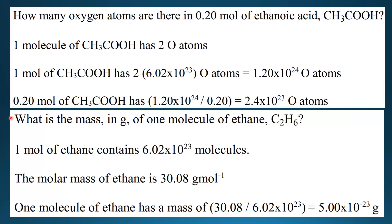The next question involves mass. What is the mass in grams of one molecule of ethane, which is C2H6? One mole of ethane contains 6.02 times 10 to the 23 molecules of ethane. The molar mass of ethane is 30.08 grams per mole. Therefore, one molecule of ethane has a mass of the molar mass divided by Avogadro's constant, which gives us 5.00 times 10 to the negative 23 grams.